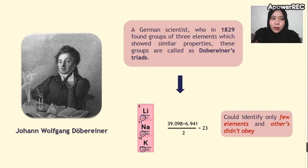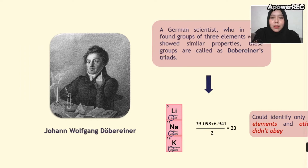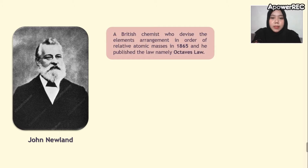After the failure of the Döbereiner Triads, the next attempt to classify elements was done by John Newlands, a British chemist who devised an arrangement of elements in order of relative atomic masses in 1865 and published the Law of Octaves.